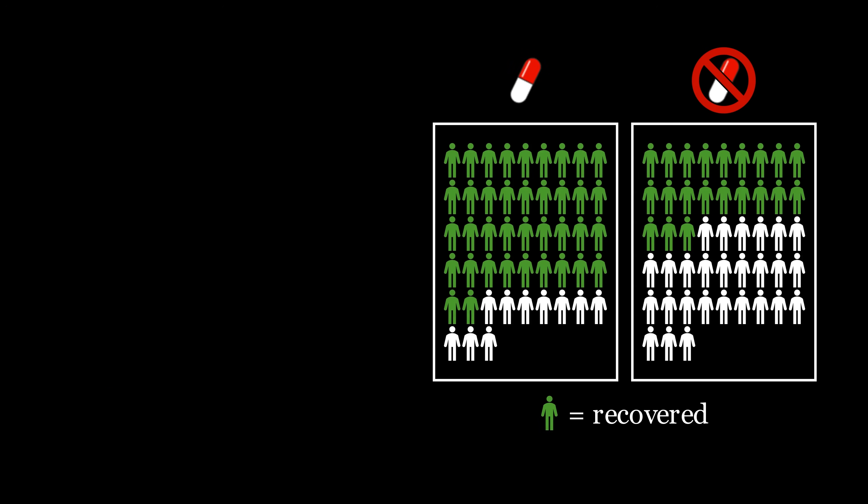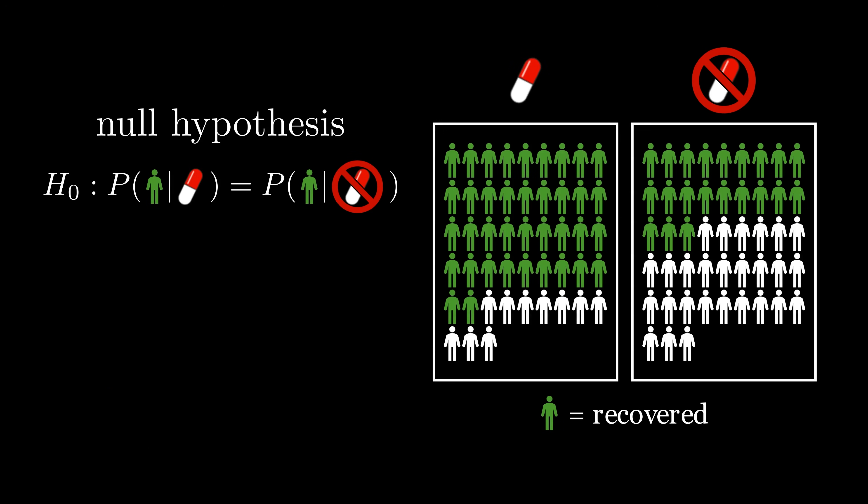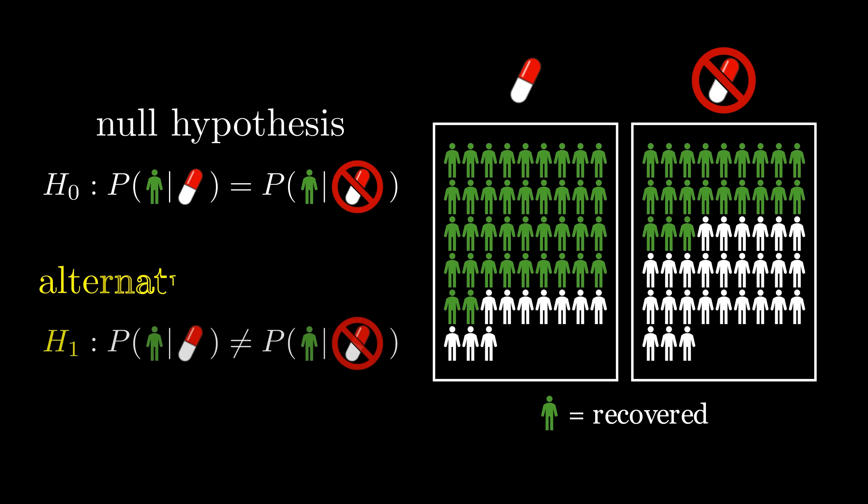For instance, in the drug testing example, the null hypothesis is that the drug has no effect. The chances of recovery with the drug are equal to the chances of recovery without the drug. And the alternative hypothesis is that the drug does have some effect. That is, these probabilities are unequal.